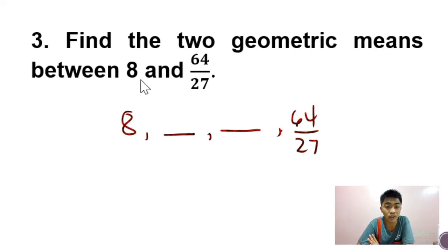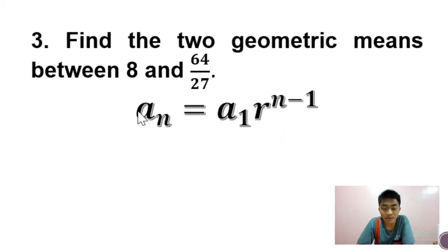So paano na natin makukuha yung geometric mean ng sequence na to? Well, we are going to use the formula. So sa formula na ito, gagamitin natin yung binibigay na terms for us to solve for the common ratio. And after solving for the common ratio, we are going to multiply it to the first term to get the next terms. So let's try to do that.